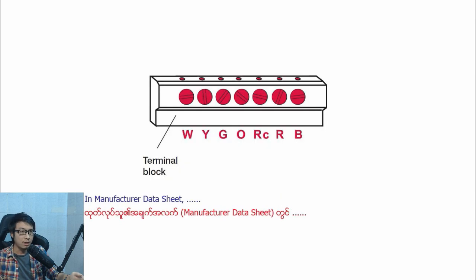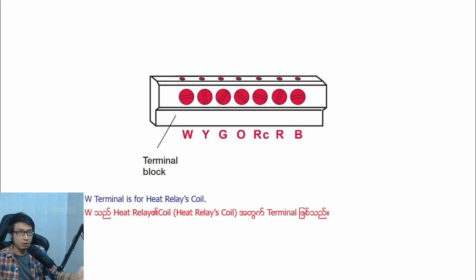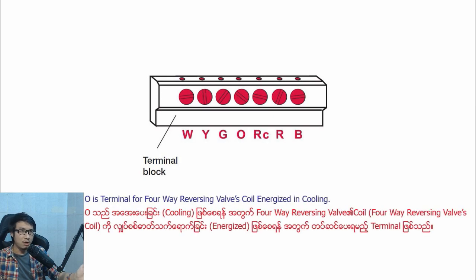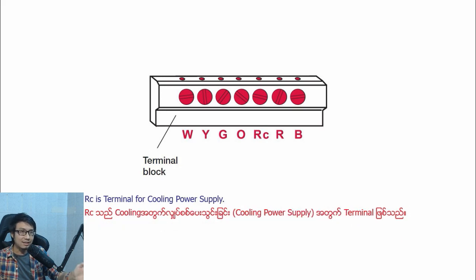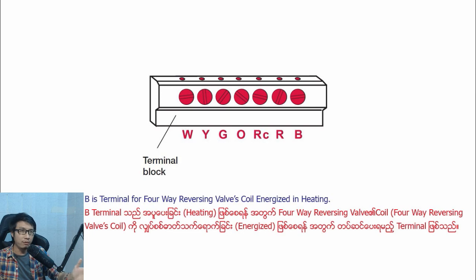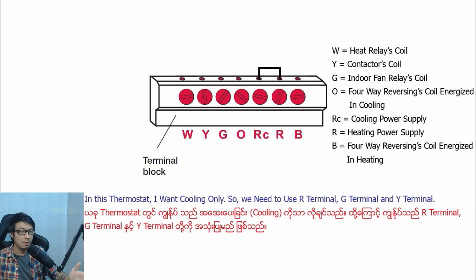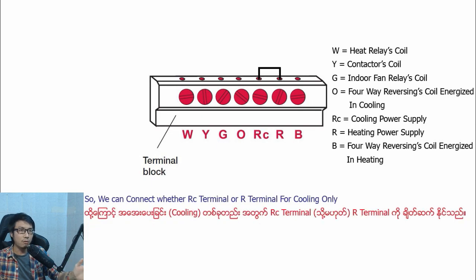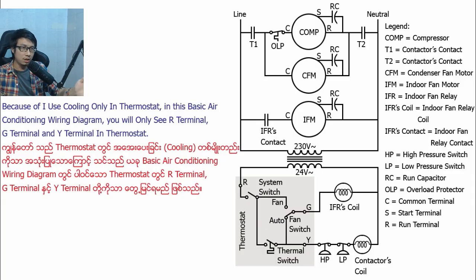In the sub-base of the 24V AC thermostat, wires need to connect to the thermostat block. According to the manufacturer datasheet: the W thermostat wire is for the heat relay coil, Y thermostat is for the contactor coil, G thermostat is for the indoor fan relay coil, O is the thermostat for the four-way reversing valve coil energizing cooling, RC is thermostat for cooling power supply, R is thermostat for heating power supply, and B is thermostat for the four-way reversing valve coil energizing heating. In this thermostat, for cooling only, we need to use R, G, and Y thermostat wires, and jump a wire from RC to R thermostat.